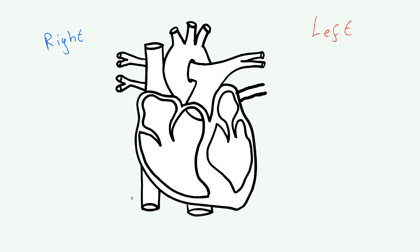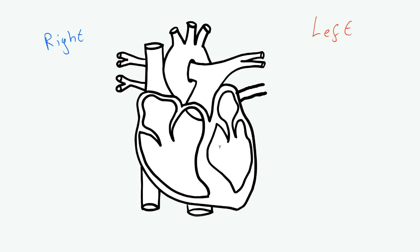Now let's get on to naming the chambers. Don't worry too much about the tubes for now — the things you really need to watch out for are the cavities. There are two smaller compartments and two larger compartments. The smaller compartments are called the atria — singular: atrium. The larger compartments are called the ventricles — singular: ventricle.